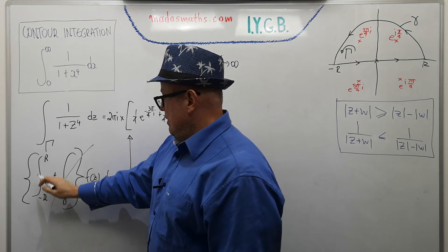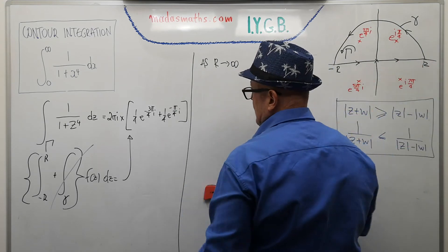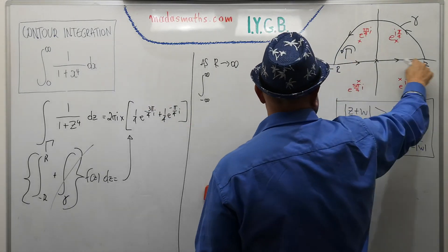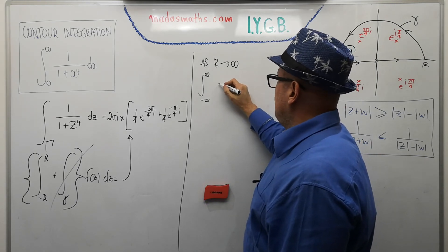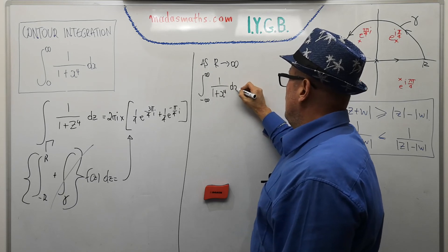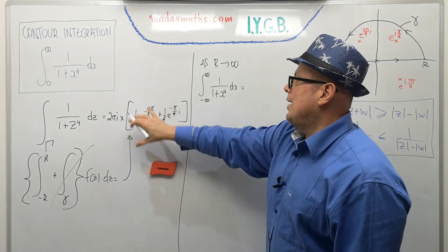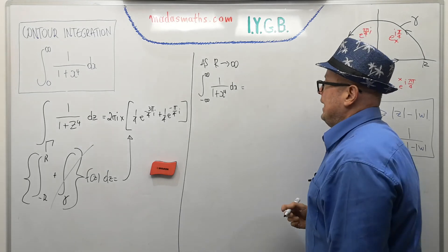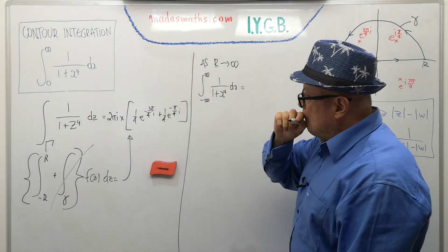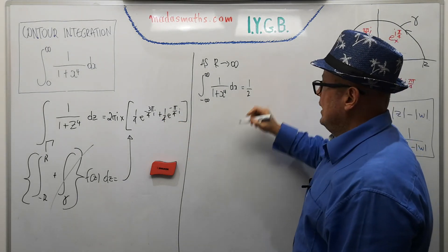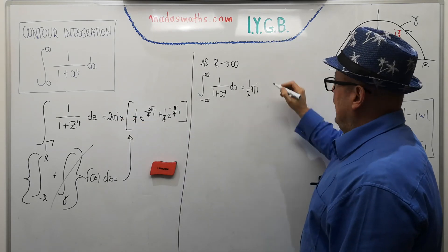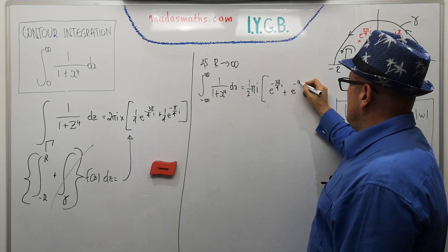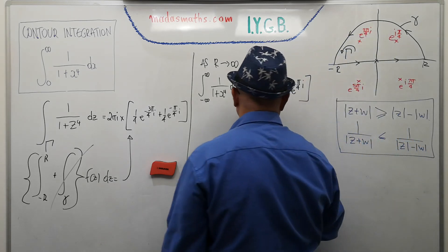Along the x-axis, z = x and dz = dx, so we get ∫_{−∞}^{∞} 1/(1 + x⁴) dx. This must equal our residue theorem result: 2πi × ¼(e^(−i3π/4) + e^(−iπ/4)). Taking a quarter out gives ½πi times (e^(−i3π/4) + e^(−iπ/4)).